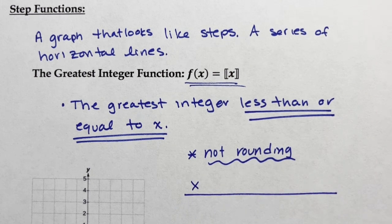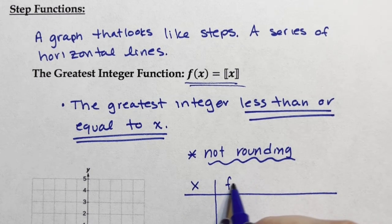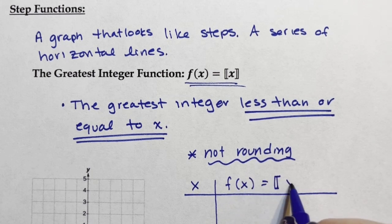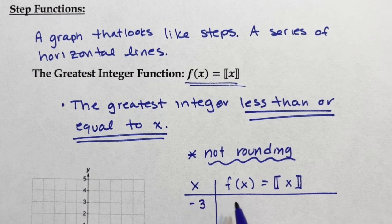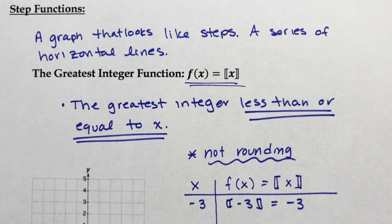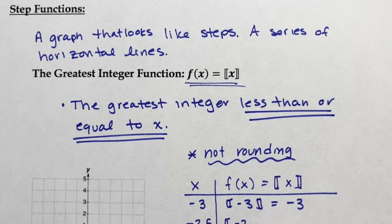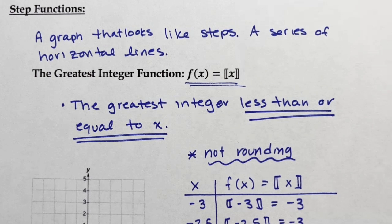I am going to do a table of values. This is going to be the greatest integer function. I am going to start down at negative 3. When you put in a single integer, it is the number — so negative 3 is specifically negative 3. But if I put something in like negative 2.5, that is where things start to get interesting. Negative 2.5 is also negative 3. Everything between negative 3 and negative 2 will become negative 3, up until we hit negative 2. And negative 2, of course, will become negative 2. So everything stays at negative 3 up until negative 2, at which point we hit negative 2. And this is our first step.